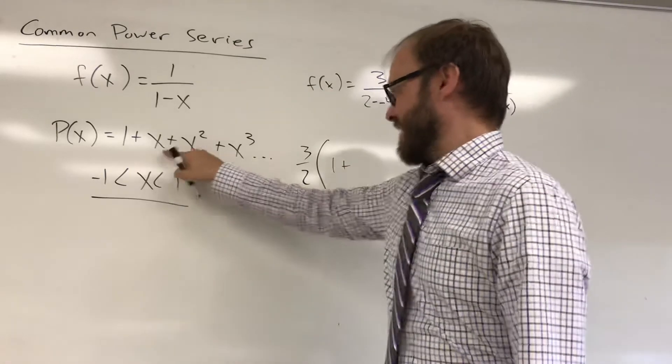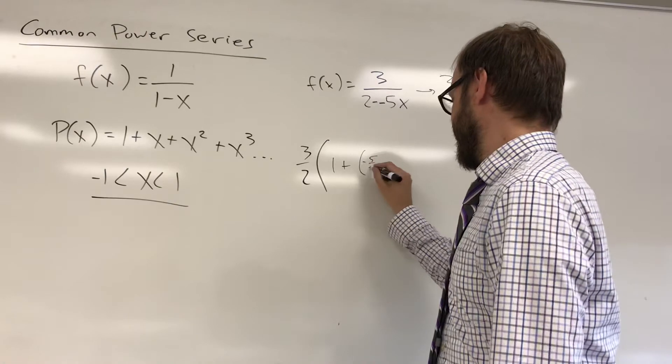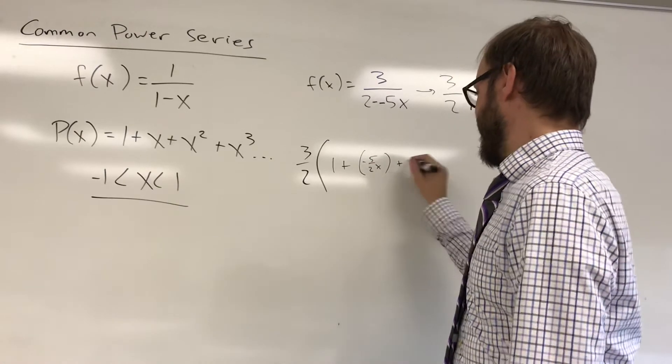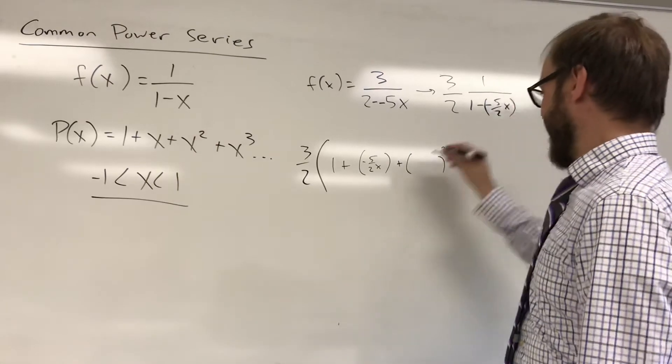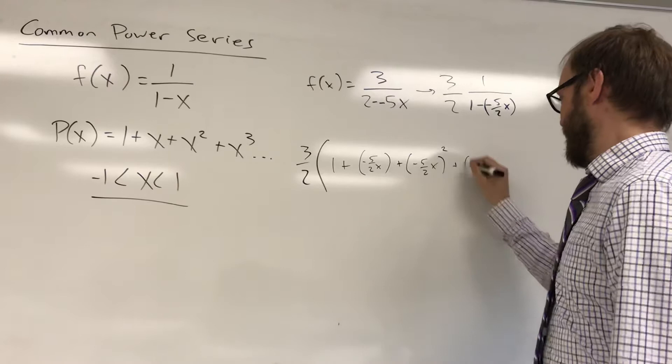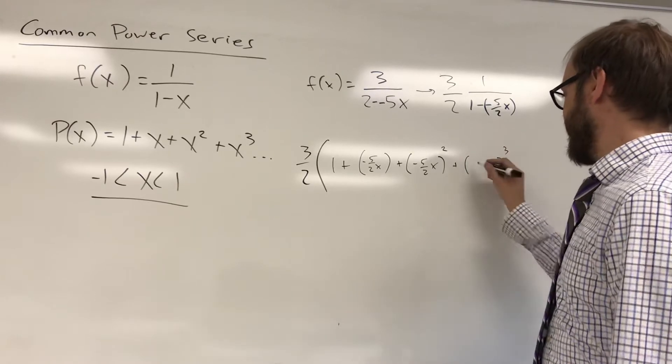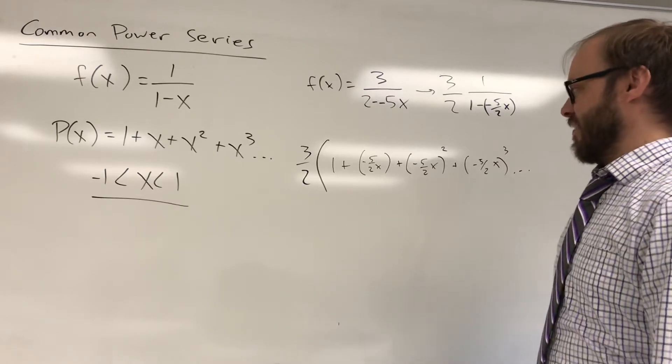So it's going to be 1 plus the input. Input's negative 5 halves x. Plus the input squared. Input's negative 5 halves x, and it's being squared. Plus the input cubed is going to be negative 5 halves x. And that's going to continue on out to infinity.